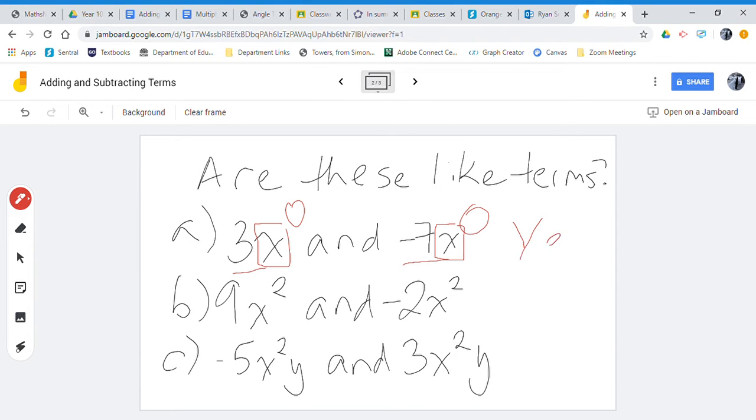Let's look at our next one. Are these like terms? So we've got x squared, we've got x squared, so so far the terms are the same. Next we check to see if our exponents or our powers are the same, which they are. So our pronumerals are the exact same and our powers are the same, so this is also a yes.